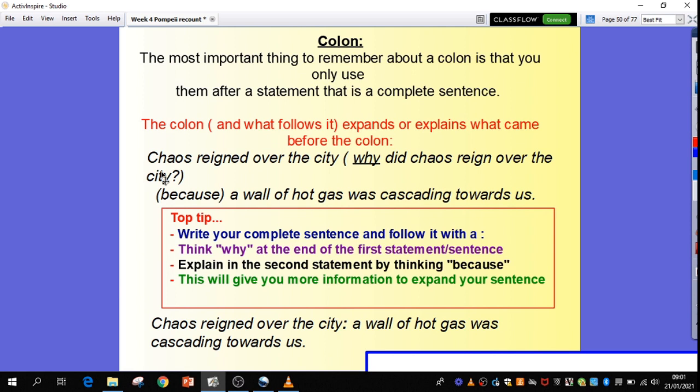So, for example here, chaos rained over the city. So, I'm asking myself, why did chaos rain over the city? Because that's something the reader would be asking as well. And you have to explain that to the reader. So, I think in my head, okay, chaos rained over the city because a wall of hot gas was cascading towards us. So, my top tip to you is write your sentence, your starting sentence, and then think, okay, what can I, if I ask why, why is something happening? What is happening? How can I explain that even more?